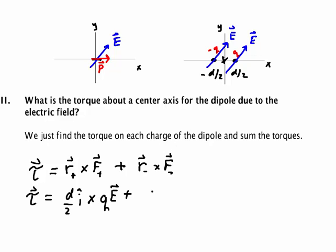going out to the negative charge is -d/2 î, and that's crossed with the force which is -qE. We can see the minuses cancel, and when they cancel I get d/2 î × qE, exactly the same as the first term.